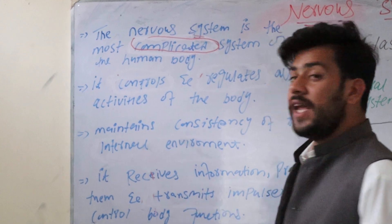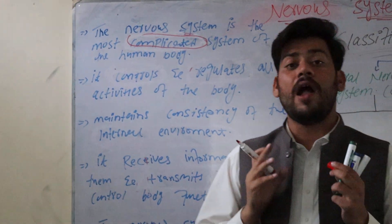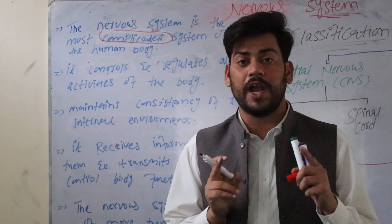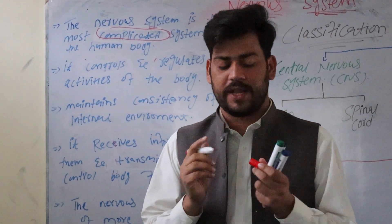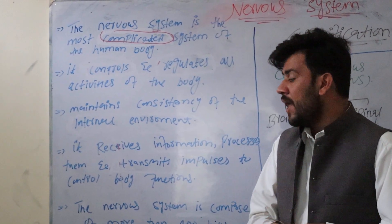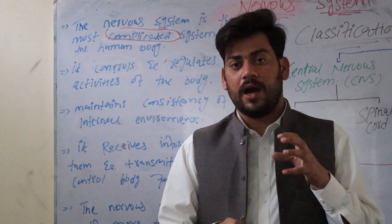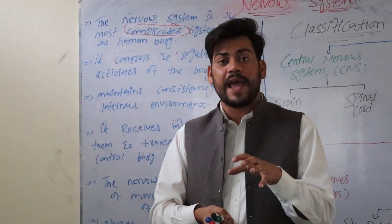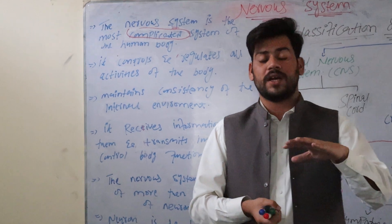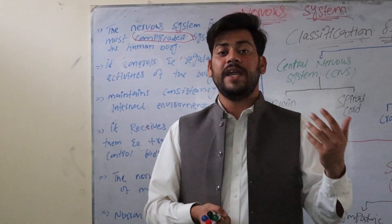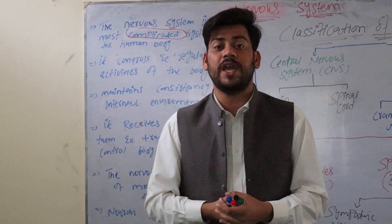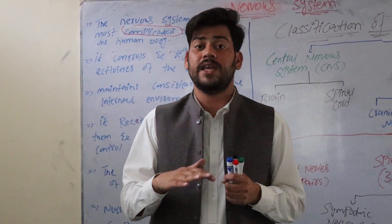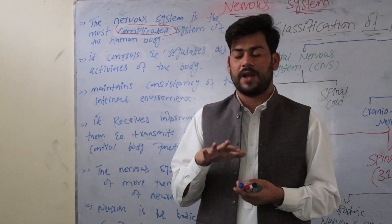The second point: the nervous system controls and regulates all activities of the body. It maintains the internal environment of the human body. The internal environment will be maintained — it will not be too high or too low. An equal, balanced position is the normal position.